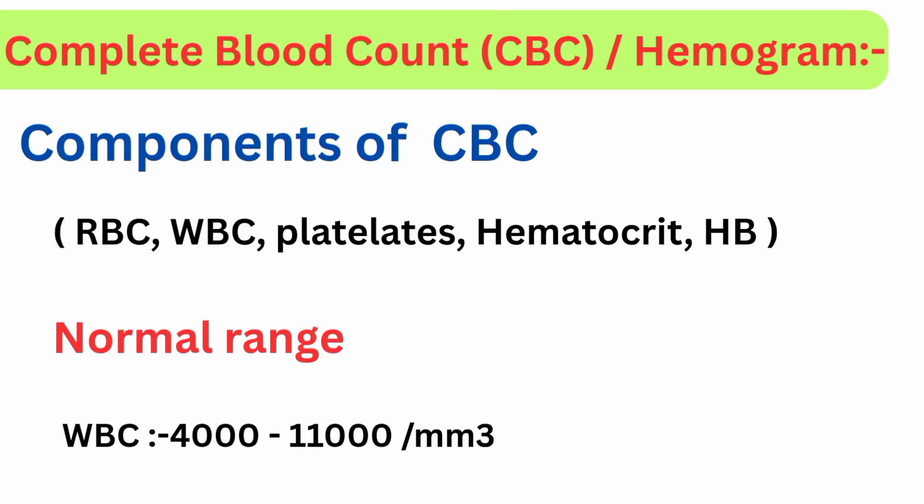Complete blood count or hemogram. Components of CBC are RBC, WBC, platelets, hematocrit, and hemoglobin. Normal range: WBC is 4,000 to 11,000 per mm³.